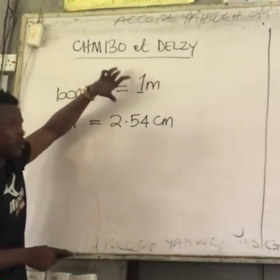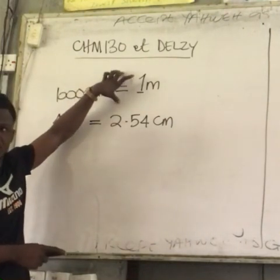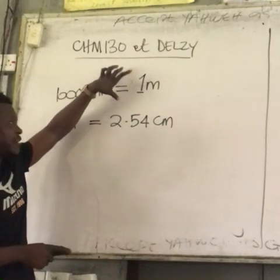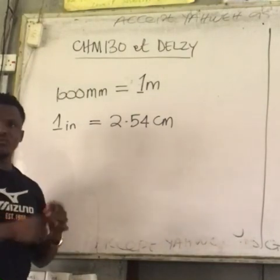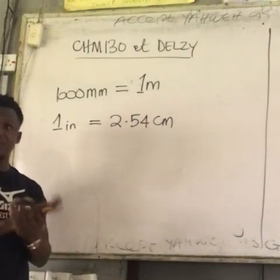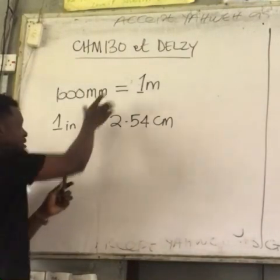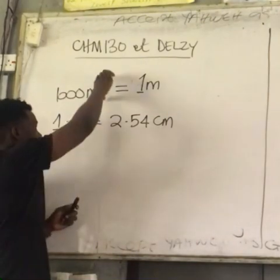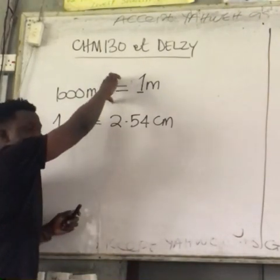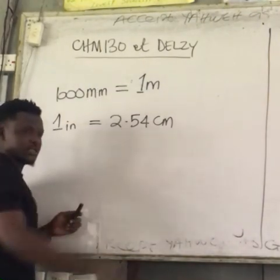Give me the conversion factor for each. Remember, a conversion factor is in fraction form. This is a relationship, so I need a conversion factor for each one.